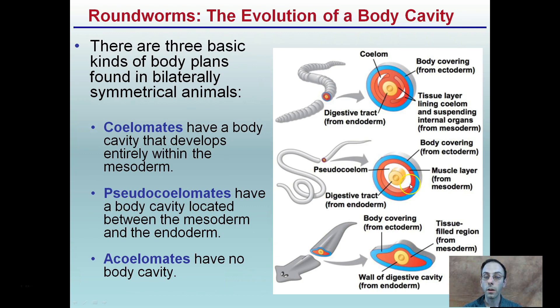We're going to continue with other videos and sections covering coelomates, which have a body cavity that develops entirely within the mesoderm. This picture uses similar colorations to allow you to compare and see some similarities as well as differences between these different animals. And again, we're talking about pseudocoelomates here with our roundworms.